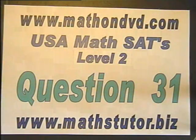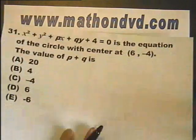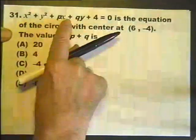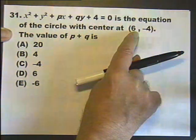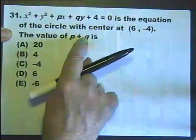Math SATs Level 2 Question 31. We are given this as the equation of a circle with the center (6,-4) and we have to find the value of p plus q.